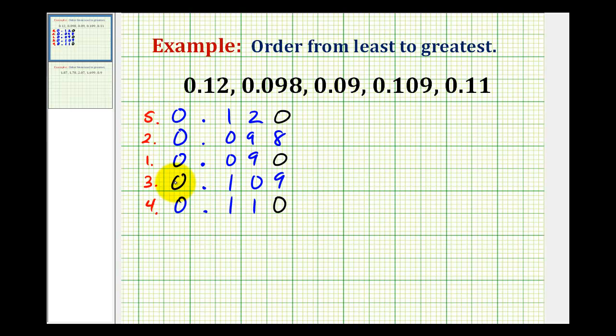So now we'll go ahead and order these from least to greatest, but we'll write them again in the original form they were given. So we'll first have 0.09, then 0.098, then 0.109, then 0.11, then the largest decimal was 0.12.